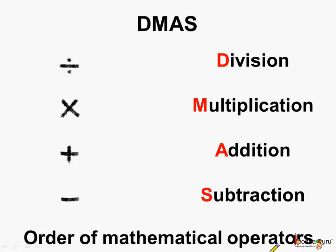According to this rule, first division should be performed, then the multiplication, then the addition, and then subtraction. Hence, the rule name is DMAS rule.